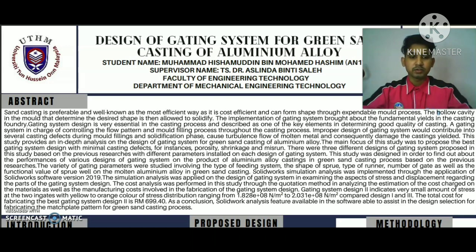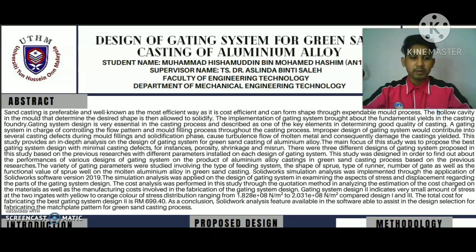The casting defects focused on are porosity, shrinkage, and misrun. There were three different designs of gating system proposed in this study based on previous research, with different parameters installed on each design. This study was designed to find out the performance of various gating system designs on the product of aluminium alloy casting in the green sand casting process. The variety of gating parameters studied include the type of feeding system, shape of sprue, type of runner, number of gates, and the functional value of the well on the molten aluminium alloy.